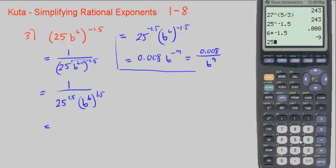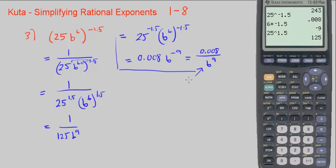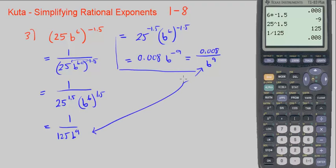25 to the 1.5 power is 125, so we have 1 over 125. And b to the 6th to the 1.5 is 6 times 1.5, so that's b to the 9th. Note that 0.008 equals 1 divided by 125 — these are equivalent — and this is our answer: 1 over 125b to the 9th.